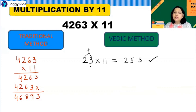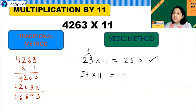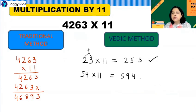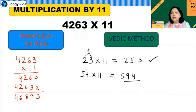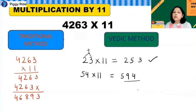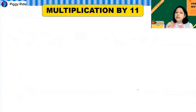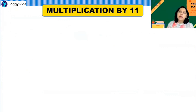Let's try 54 times 11. Same process: write 5 and 4 as they are, and 5 plus 4 is 9 in the middle, so the answer is 594. In these cases the concept is simple — just write the number as it is and add the digits in the middle. But what if the addition gives a two-digit number in the middle? Then you need one extra step.